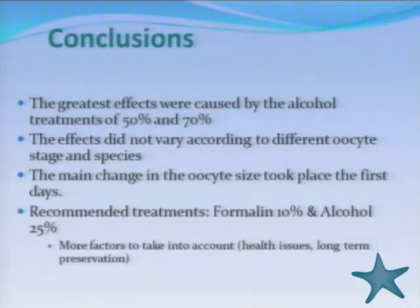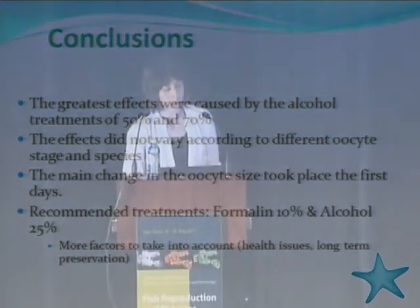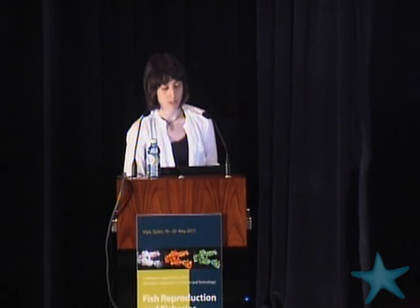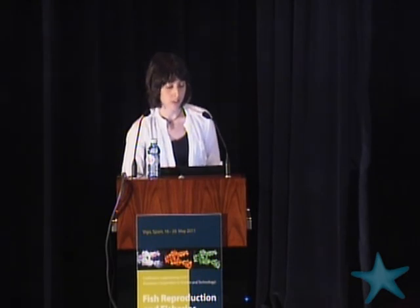In conclusion: the greatest effects were caused by alcohol treatments at 50% and 70%. The effects did not vary according to different oocyte developmental states or oocyte shape across species. The main change in oocyte size took place during the first days of treatment. Of those tested, the recommended treatments would be formalin at 10% and alcohol at 25%, though additional factors must be considered, such as health issues — given the known carcinogenic concerns about formalin — and suitability for long-term preservation, as alcohol 25% may not be adequate for long-term use.